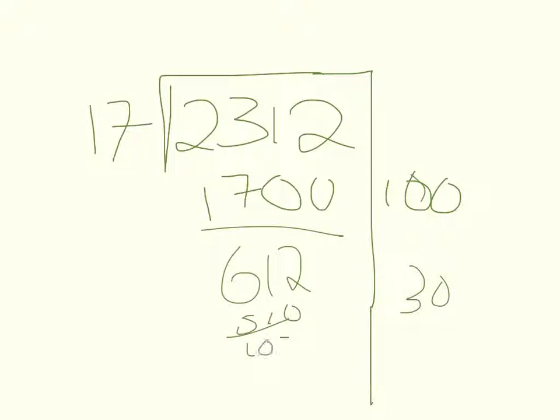That leaves me with 102. Since I don't know my multiplication tables well, I didn't know that 17 times 6 would be 102. So I started by thinking 17 times 10, but then I figured out that was too much, and halved it to 17 times 5, which is 85.